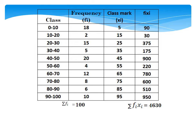18 × 5 = 90. 2 × 15 = 30. 15 × 25 = 375. 5 × 35 = 175. 20 × 45 = 900. 4 × 55 = 220. 12 × 65 = 780. 8 × 75 = 600. 6 × 85 = 510. 10 × 95 = 950. We have now completed the fourth column with all the fx values.